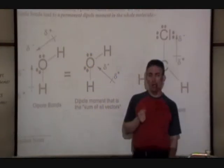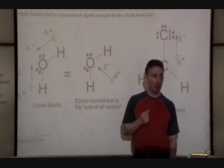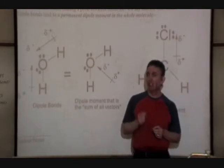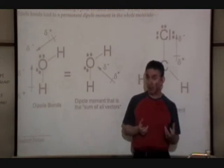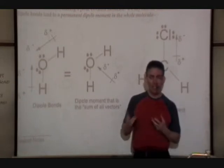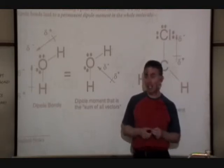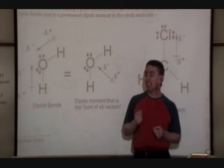We have polar covalent bonds where there's a significant difference in electronegativity. We sometimes say that these bonds are dipole bonds. One end of the bond is electron deficient, feels mildly positive. One end of the bond is electron enriched, and that atom — the electron enriched end — is slightly negative.